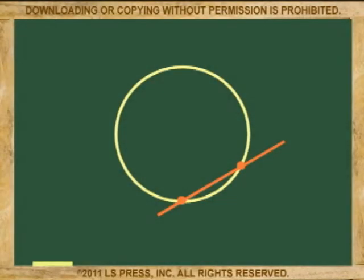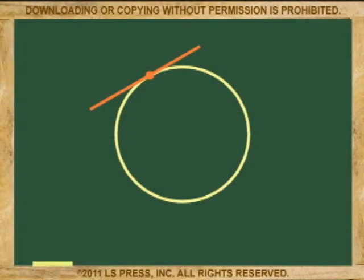A line that crosses a circle at two points is called a secant. Notice we don't call it a segment this time — that means it could be an external line or a ray that starts at the circle. If the line touches the circle at one point only, then the line is called a tangent.